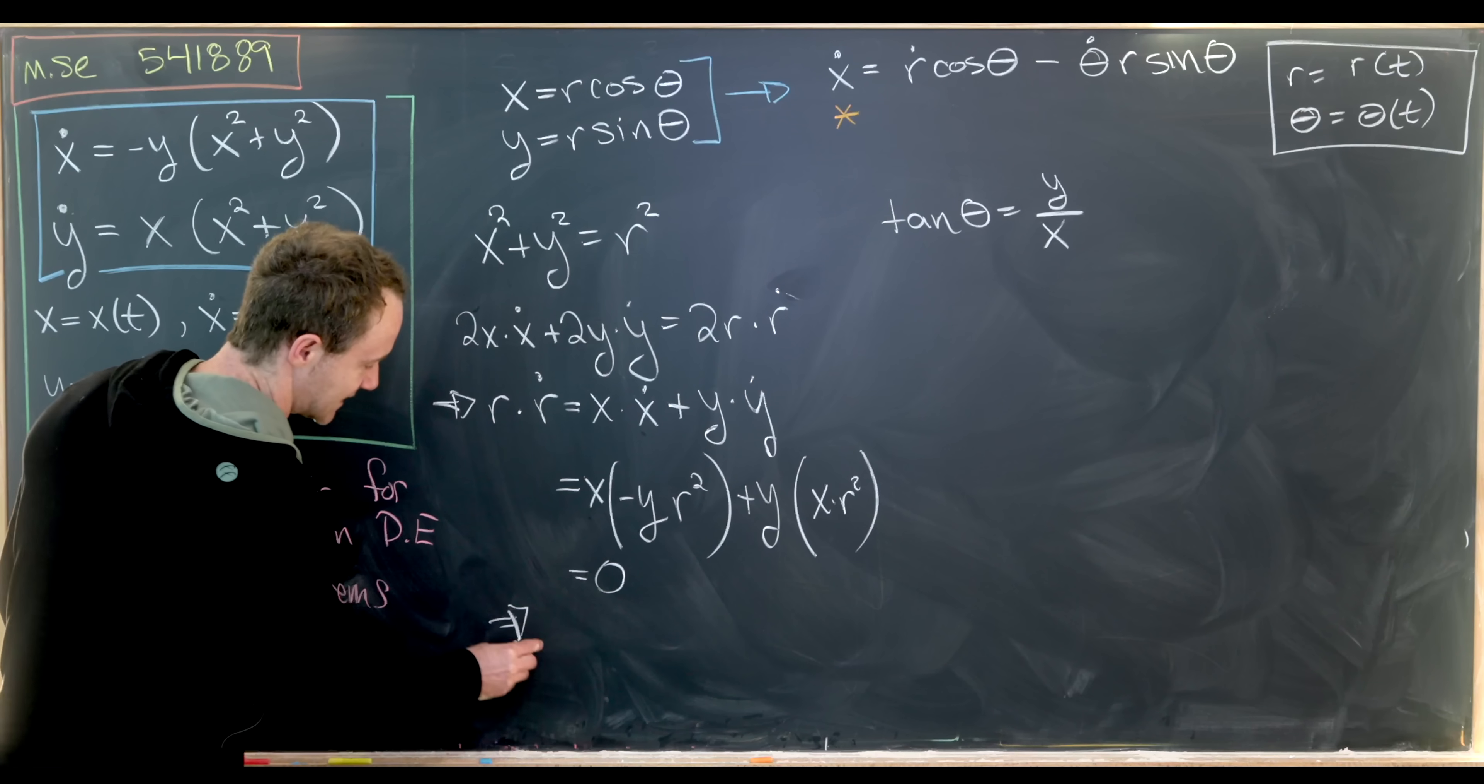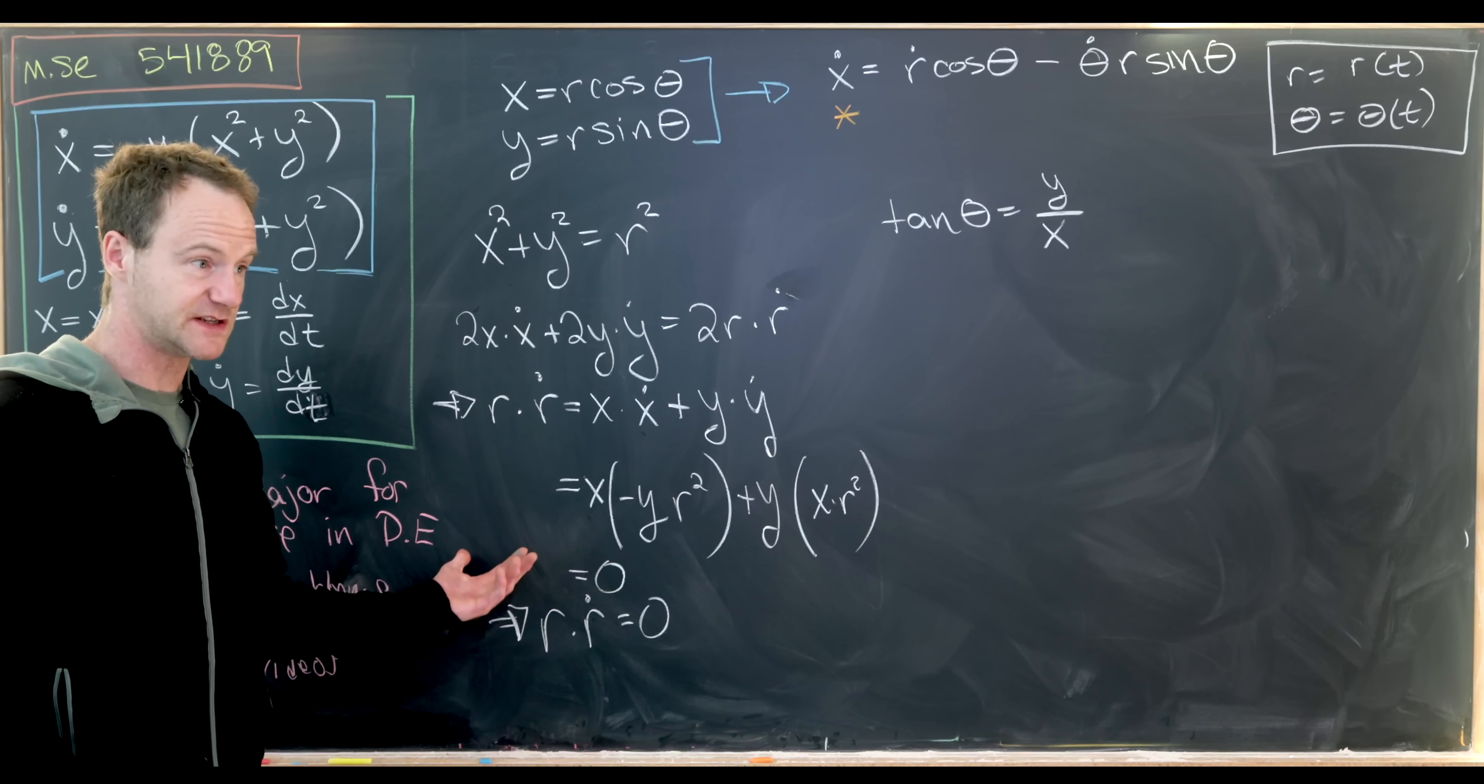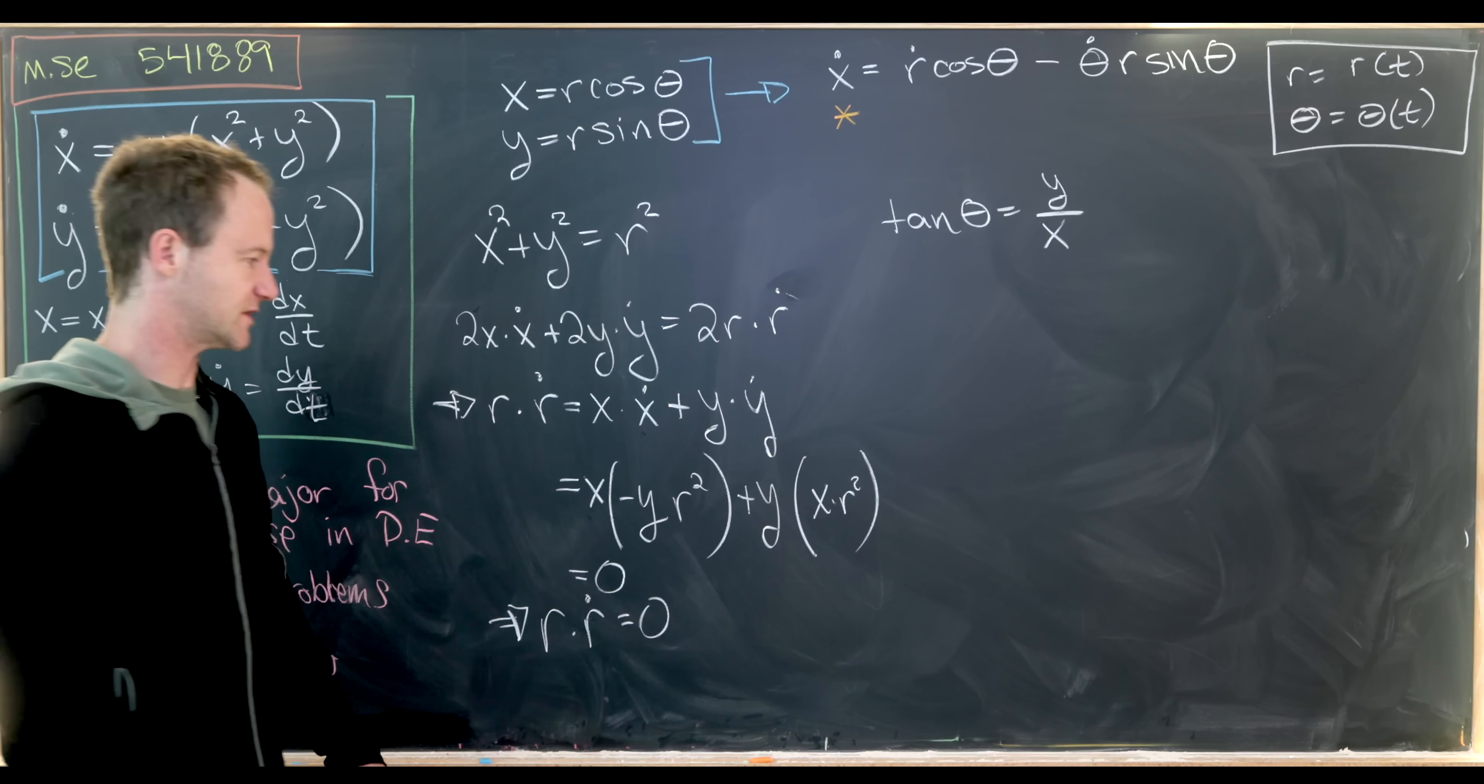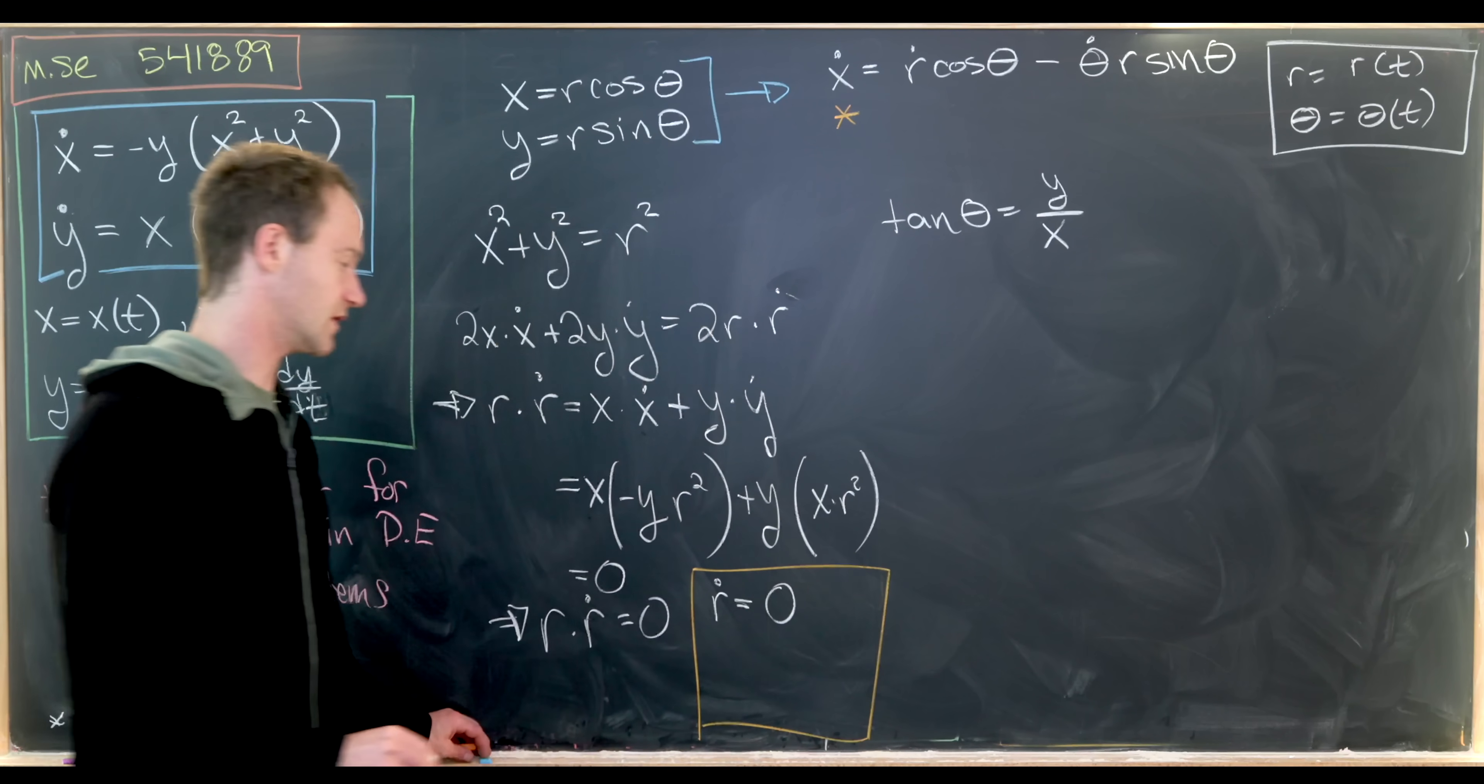So what does that tell us? We have r times r dot is equal to 0. So that splits into two cases: either r is equal to 0 or r dot is equal to 0. But notice that if r is equal to 0, then r dot is also equal to 0. So any way you put this, we get that r dot is equal to 0.